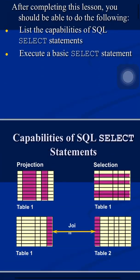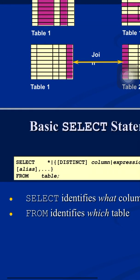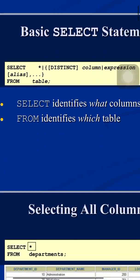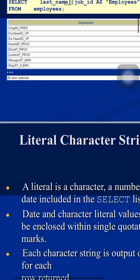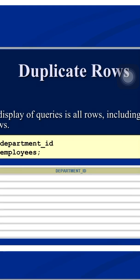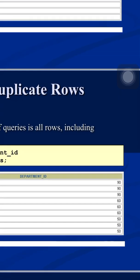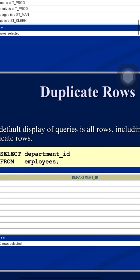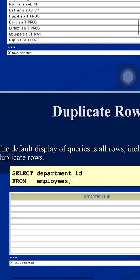To remove duplicate rows, we can use the DISTINCT keyword. Writing SELECT DISTINCT department_id FROM employees will display each department_id only once — department 90 appears once, department 60 appears once, department 50 appears once. I hope you have understood all the examples for the SELECT query. In the next chapter we will discuss further clauses.